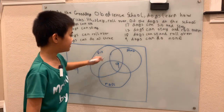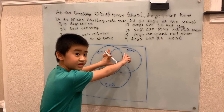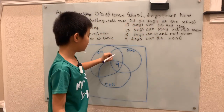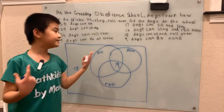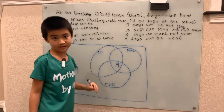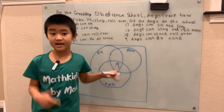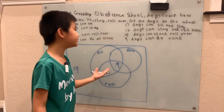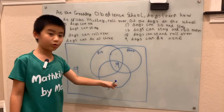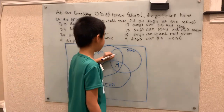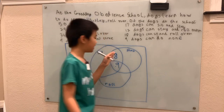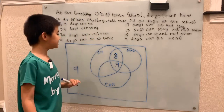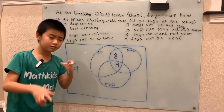Looking at the overlap region for sit and stay — those two sections have to sum to 17, because they're the dogs that can sit and stay. But 9 of those 17 dogs can also roll over, so we have 17 minus 9, which gives us 8 more dogs that can only sit and stay.